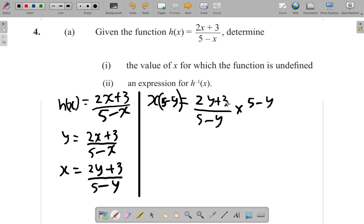Just to bring both sides by 5 minus y, just to bring both y's on top. So 5 minus y cancels to 5 minus y here. So we have here, what we have here is x times 5 minus y is equal to 2y plus 3.